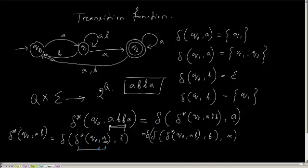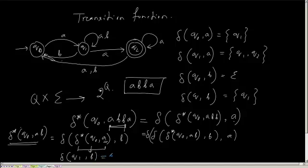Extended transition function of Q0 with A is only Q1. So I can go to delta of Q1 comma B. What will be my extended transition function for Q0 comma B? It will be Q1 comma B, which gives Q1 comma Q0.